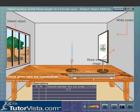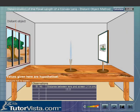Repeat the experiment by adjusting the position of the lens and the position of the screen to obtain a sharp, inverted image of the tree.